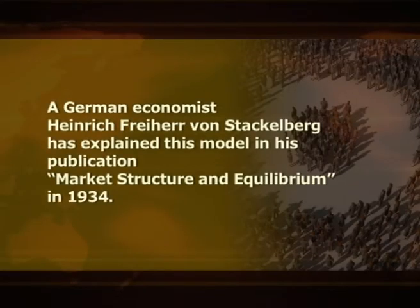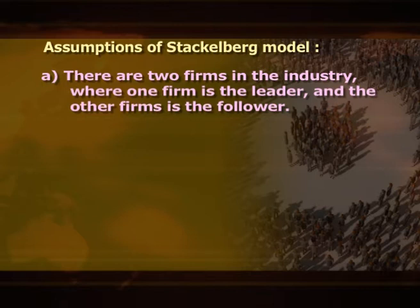A German economist, Heinrich Freiherr von Stackelberg, explained his model in his publication Market Structure and Equilibrium in 1934. The Stackelberg competition is a model of imperfect competition. According to Stackelberg, quantity leadership prevails when there is one dominant firm and the other firm is either small or less important in the industry. The Stackelberg model represented a turning point in the study of market structure, particularly in the analysis of duopoly, because it provides different conclusions than the Cournot and Bertrand models.